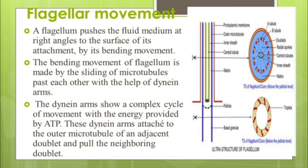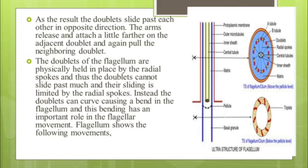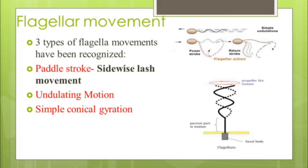The dynein arms show a complex cycle of movement using energy provided by ATP. The dynein arms attach to the outer microtubule of an adjacent doublet and pull the neighboring doublet. As a result, the doublets slide past each other in opposite directions; the arms release and attach a little further on the adjacent doublet and pull again. The doublets of the flagellum are physically held in place by the radial spokes, so instead of sliding past each other, the doublets curve, causing a bend in the flagellum, which is important for flagellar movement.